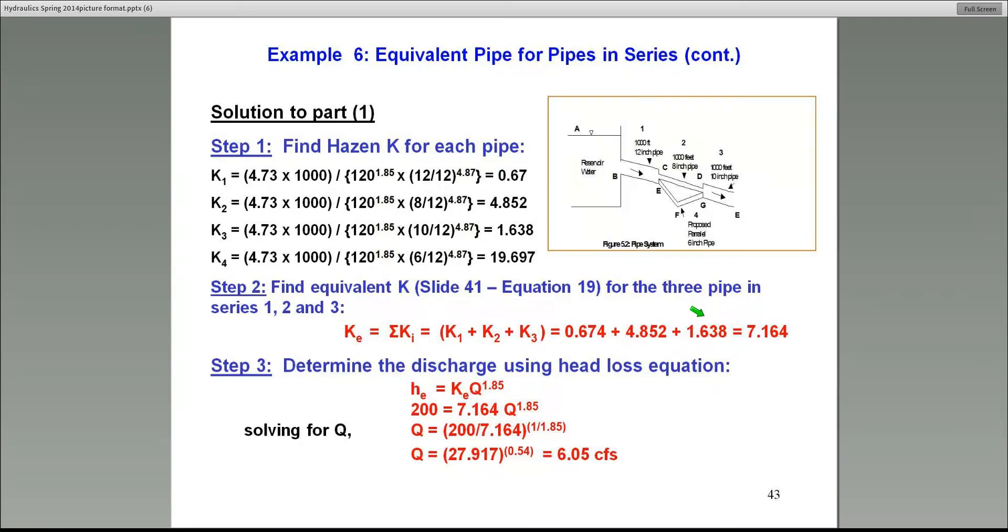I'm going to use that KE in this head loss equation. The head loss has to be obtained from the Bernoulli equation. That Bernoulli equation is going to be applied from point A to point E. The head loss from A to E is 200 feet, obtained independently from the Bernoulli equation.